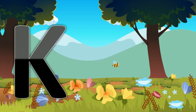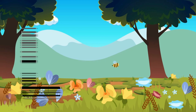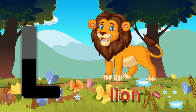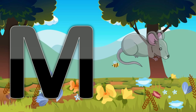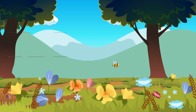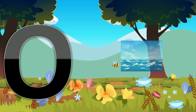K for King. L for Lion. M for Mouse. N for Net. O for Ocean.